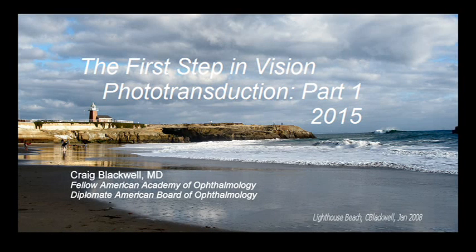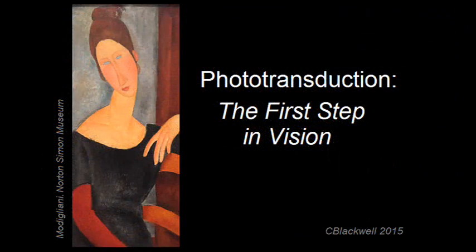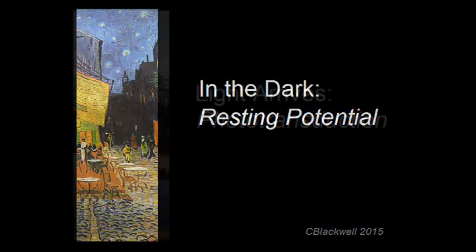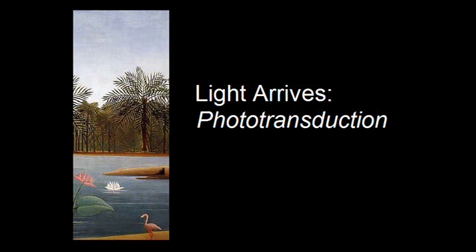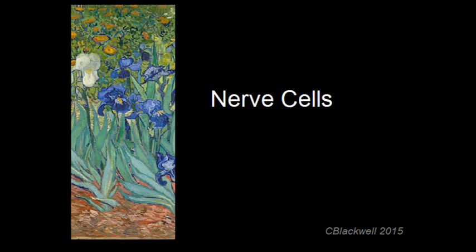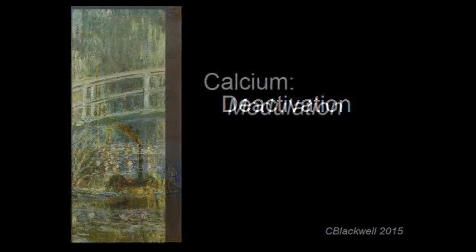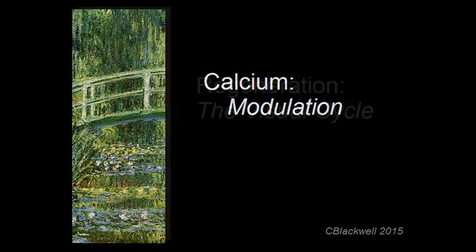This video is about the first step in vision, phototransduction. Our sense of vision is truly amazing. Photoreceptors, that is rods and cones, are specialized cells in the retina that sense incoming light and begin the process of generating a nerve impulse. This is called phototransduction.